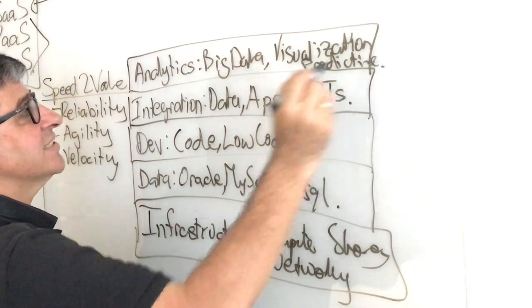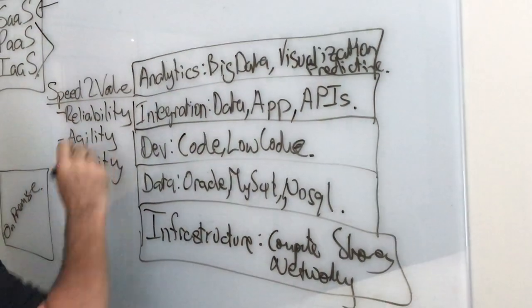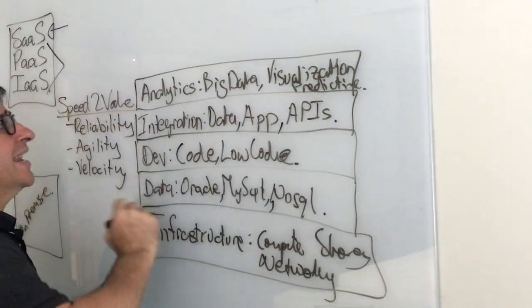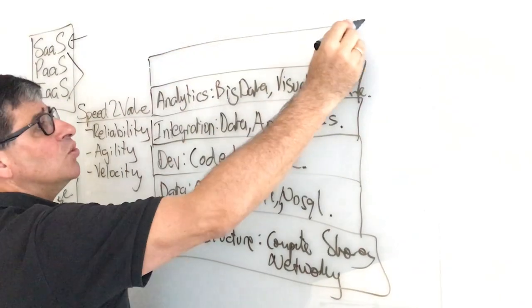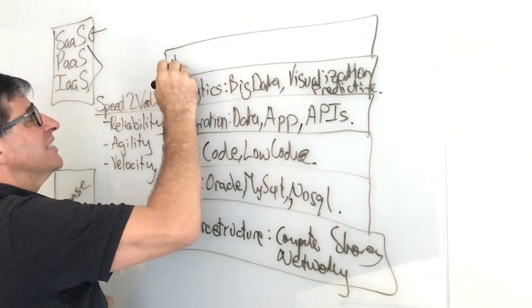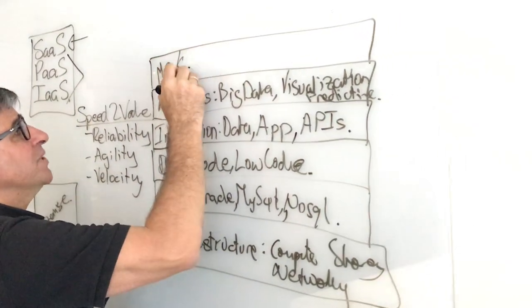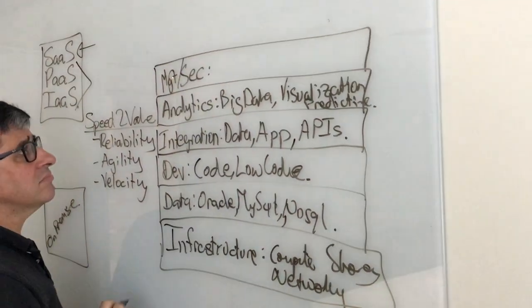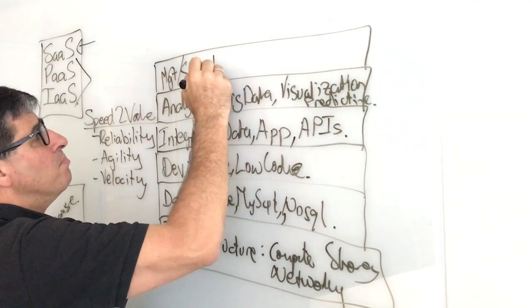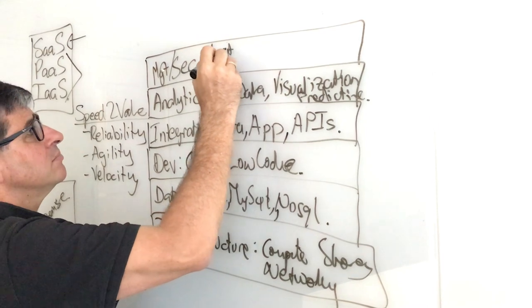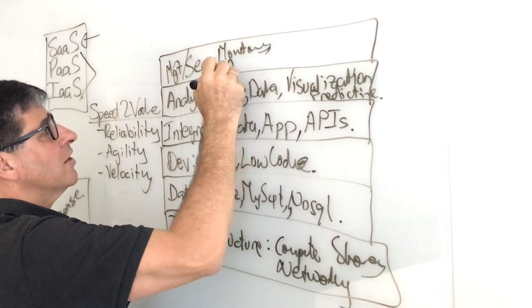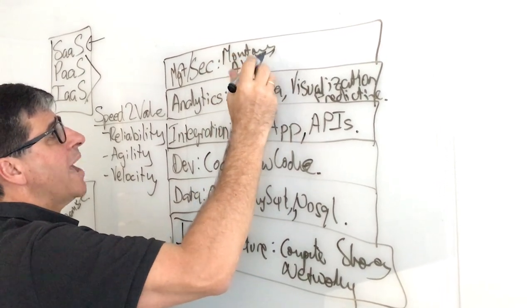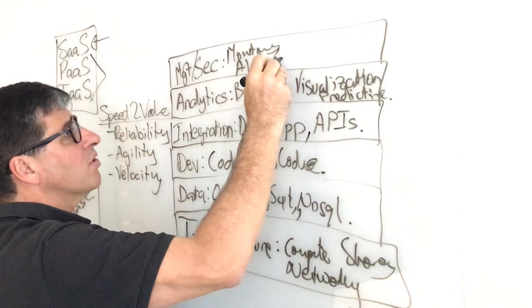Once you've got all of this running, it's fundamental to have a set of capabilities around management and security, which includes monitoring what's going on, looking at alerts, maybe eventing and kicking off orchestrations.